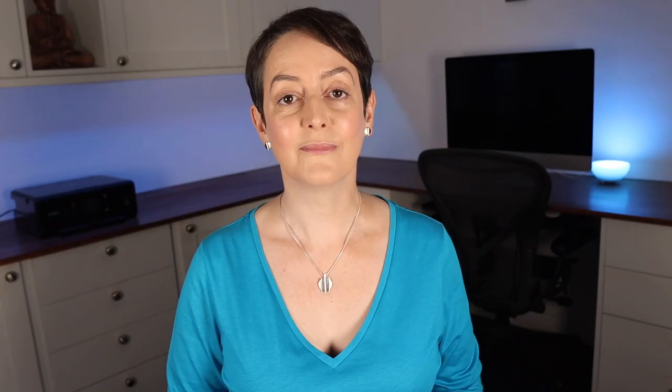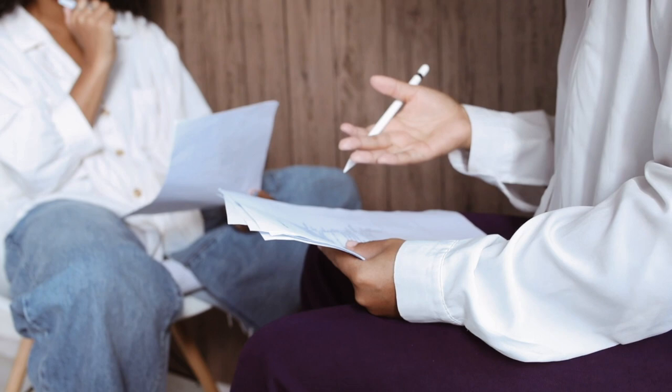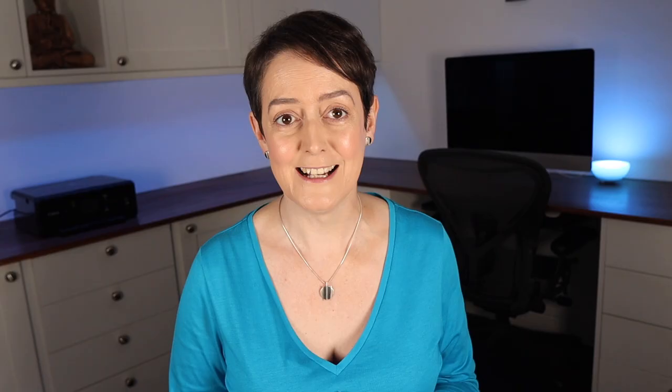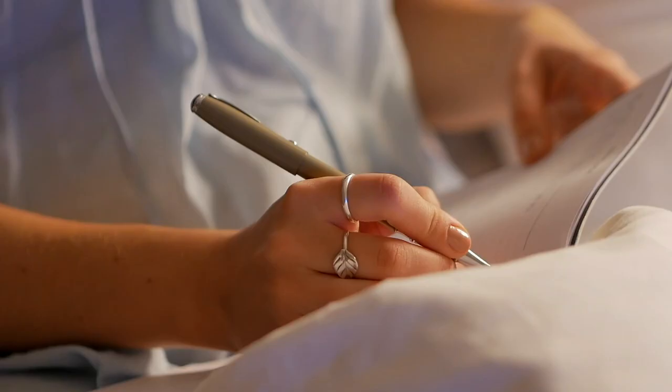The ABC framework can be used early in therapy to teach basic cognitive behavioural concepts. It can also be helpful to ask the client to record their own ABC patterns as homework. This model helps the client understand what exactly triggers their emotions and behaviours, and to realise that although they can't always control what happens, they can control how they respond.